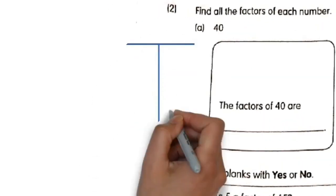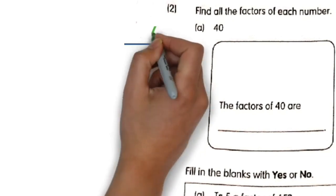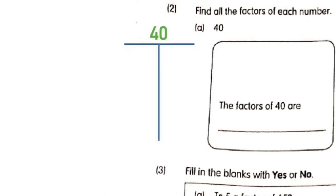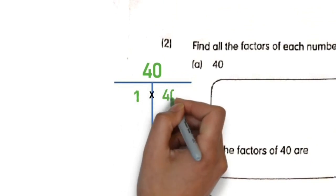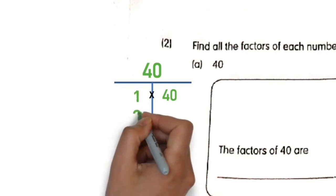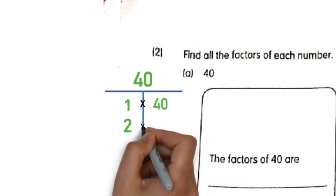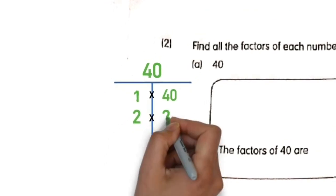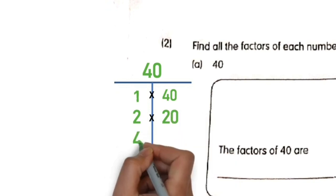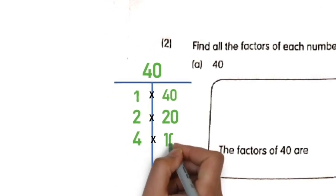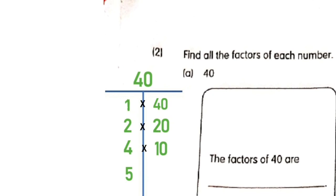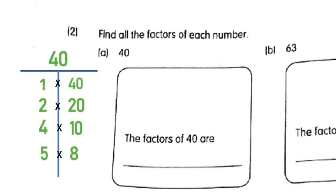In the first question, we need to find the factors of 40. Let's put 40 on the top. The first multiplication of 40 will be 1 times the number, which is 40. Since 40 is an even number, it can be divided by 2. 2 times? Yeah, it is 20.